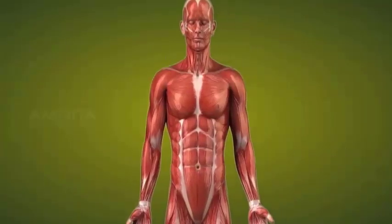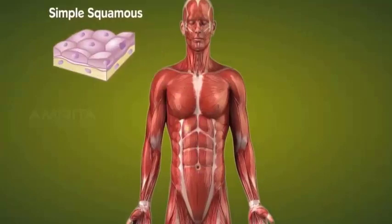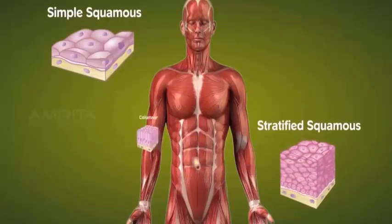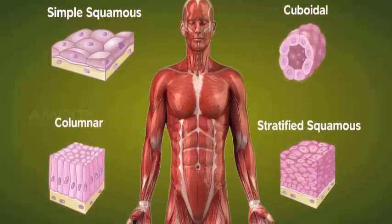Epithelial tissue is subdivided into simple squamous, stratified squamous, columnar, and cuboidal epithelium based on the shape and function of their cells.